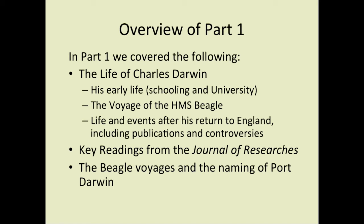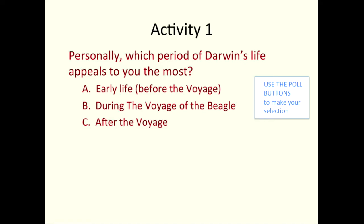So we thought we would start by testing out the polling. The Charles Darwin book — The Concise Story of an Extraordinary Man — is by Kim Berra, B-E-R-R-A. And the other one is just called Charles Darwin by Adrian Desmond, James Moore, and Janet Brown — part of the Very Interesting People series by Oxford University Press, published in England.